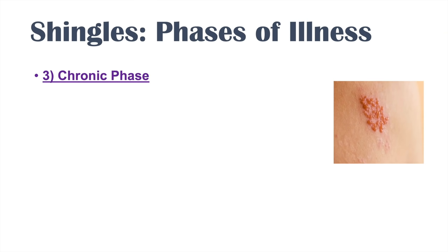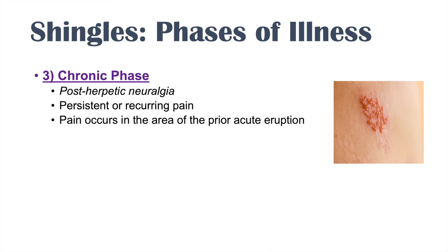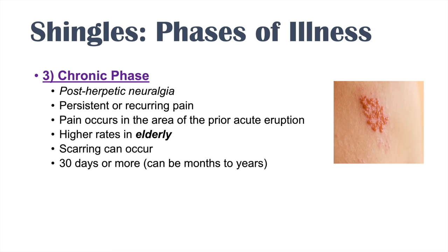The last phase of shingles is the chronic phase. After the two to three days of acute eruptive phase where the vesicles erupt and involute, we can get post-herpetic neuralgia — persistent or recurring nerve pain even without the eruption. That area where it erupted originally will continue to have pain or intermittent recurring pain. There are higher rates of post-herpetic neuralgia in the elderly, and we can also see scarring from the erupted vesicles. This phase can last 30 days or more, even months to years.